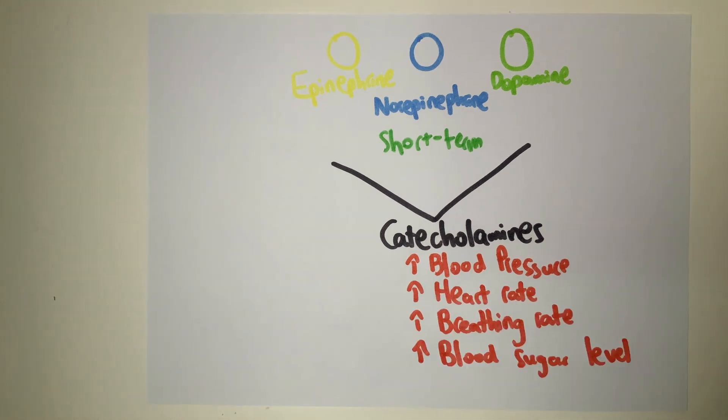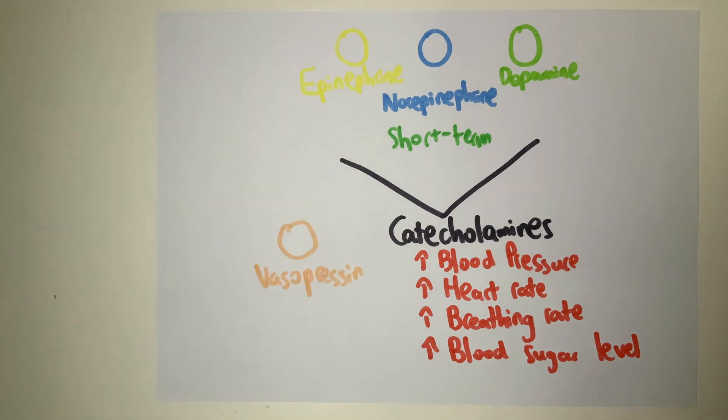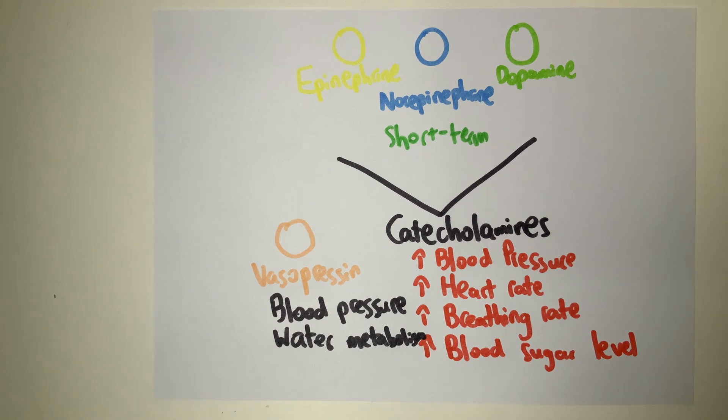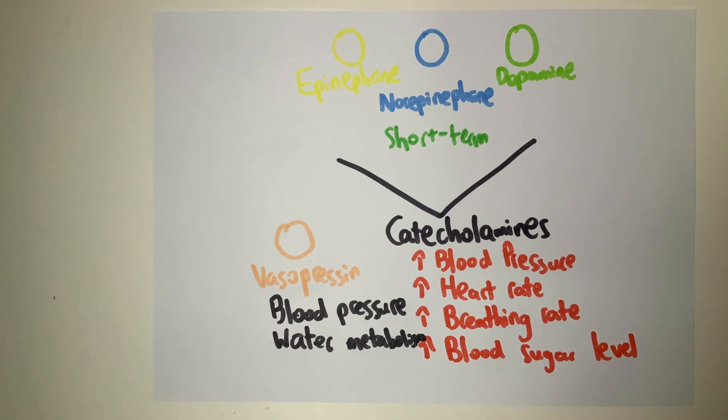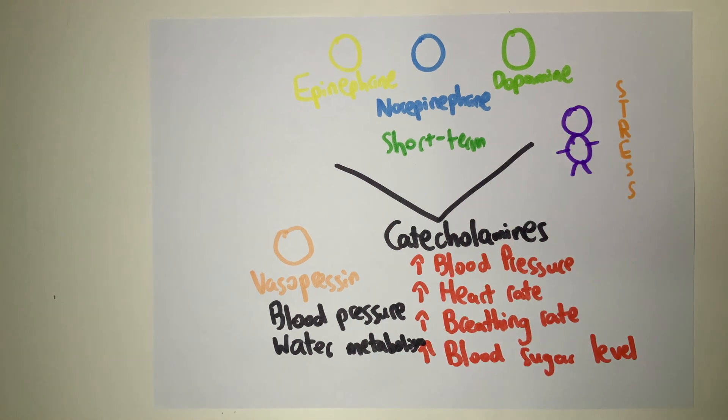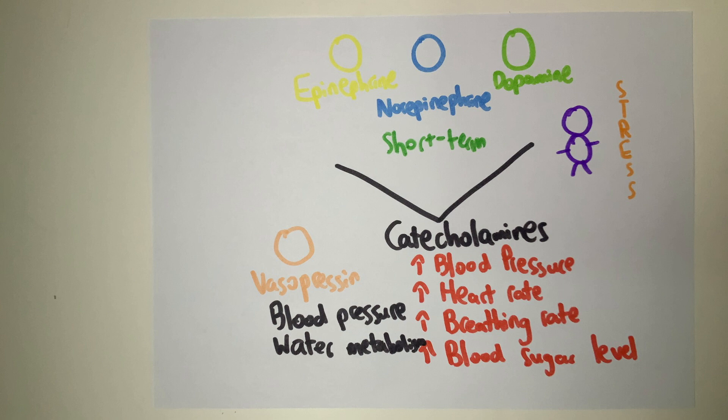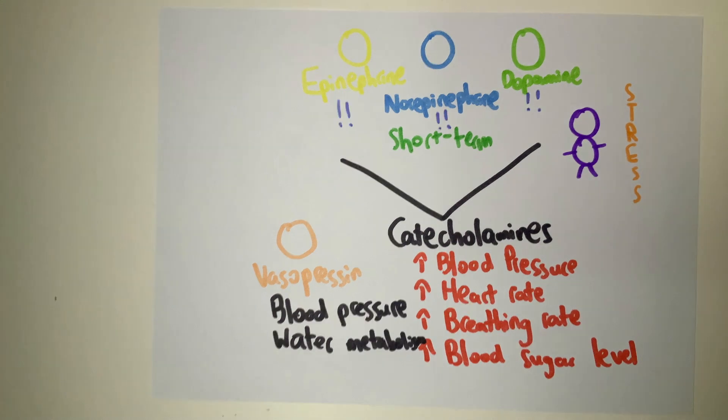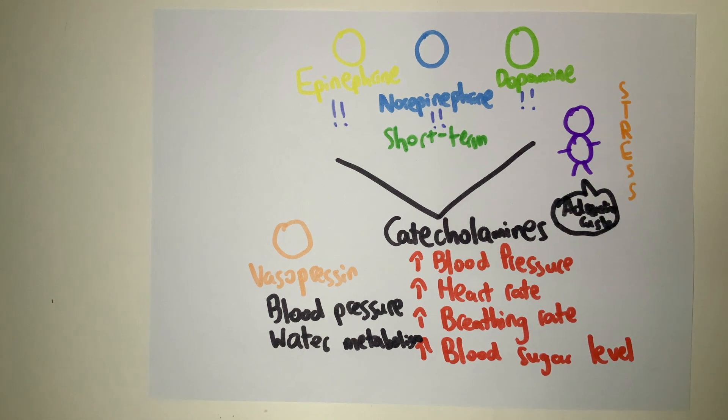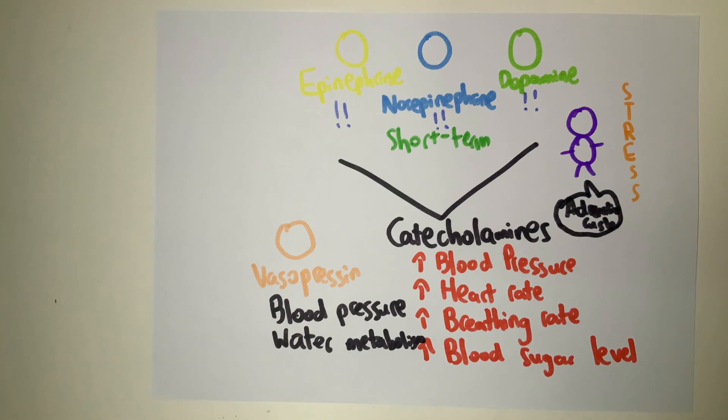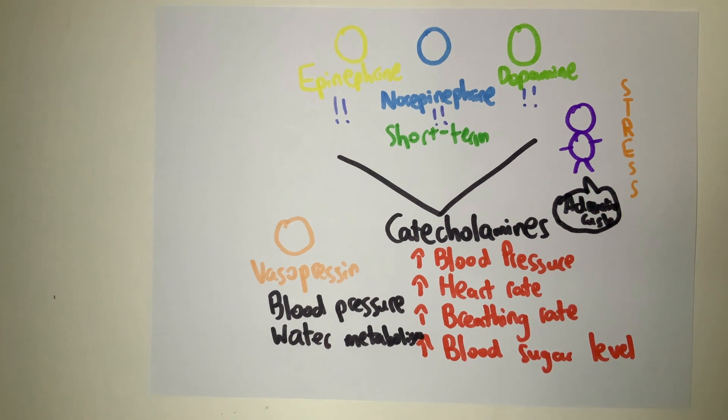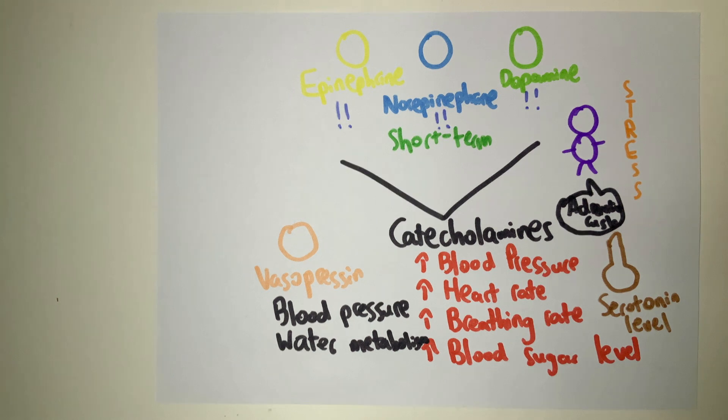Similarly, a hormone called vasopressin modulates blood pressure and water metabolism. When the body encounters a stress-inducing event, these catecholamines are released in large amounts. This is the reason why many people report experiencing an adrenaline rush when encountering a large threat, such as an assassin or an audition. Interestingly, chronic stress has been shown to affect the level of serotonin, a neurotransmitter that regulates mood in the brain.